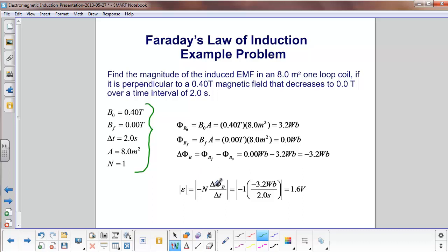So before we get to Faraday's equation, let's look at the flux. The initial flux is B0 times A, and of course it's the component of B that's perpendicular to A, which frankly is all of B because we say it's perpendicular. So the initial flux is 3.2 Webers. The final flux is 0 because there's no magnetic field.